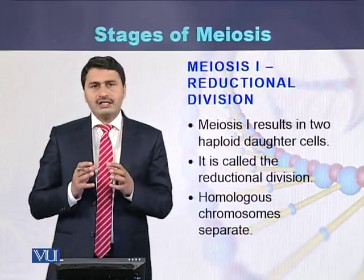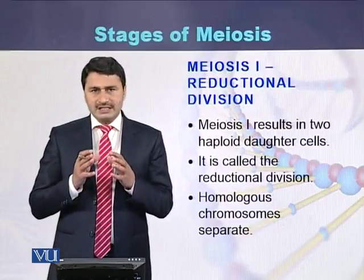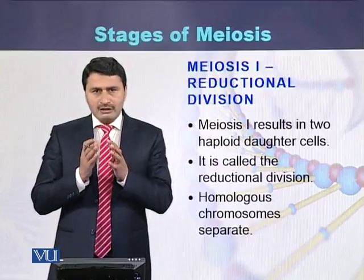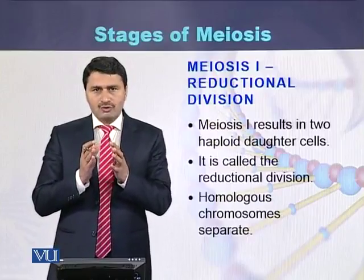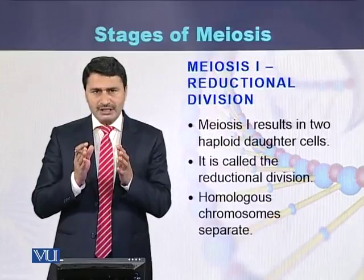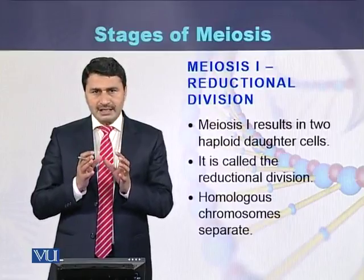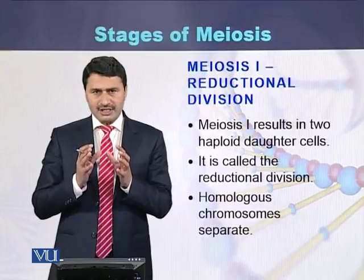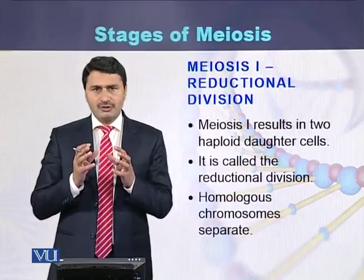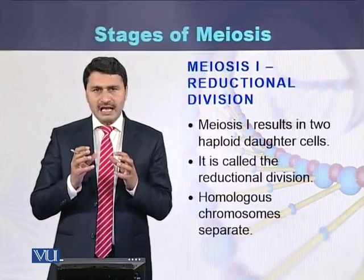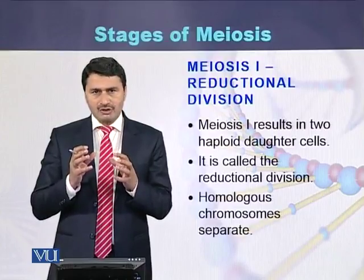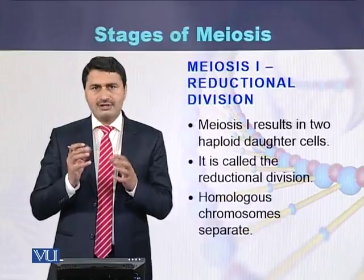Meiosis I is also called reductional division, because in meiosis I the homologous chromosomes separate from each other. If a cell contains a total of 46 chromosomes, as a result of meiosis I, each of the resulting cells will contain 23 chromosomes. So meiosis I is also called reductional division.